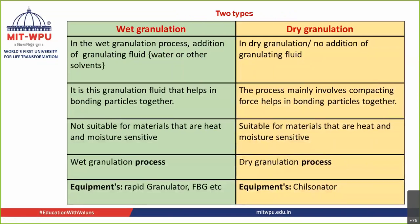In wet granulation technique, you use a solvent — either water or a non-aqueous solvent such as alcohol. To this solvent you add a binding agent, and this solution is added to the powders and mixed to form a wet mass. In dry granulation, you do not add any liquid — no water, no solvent — and you do not prepare a wet mass.